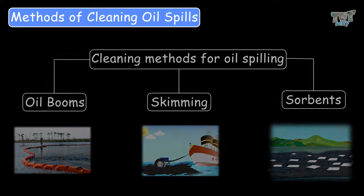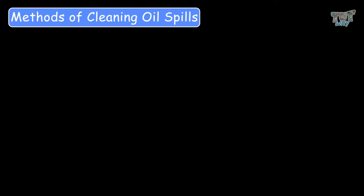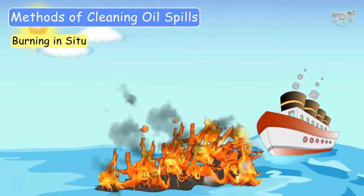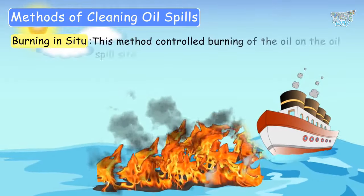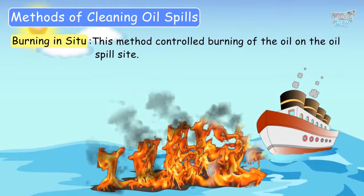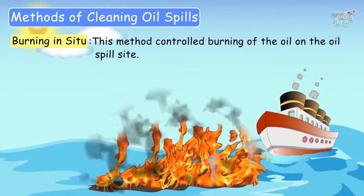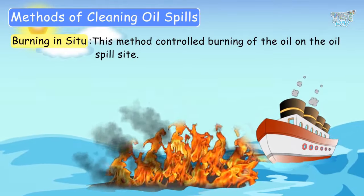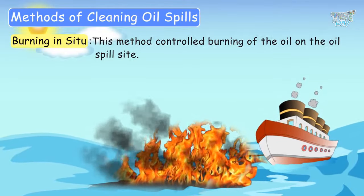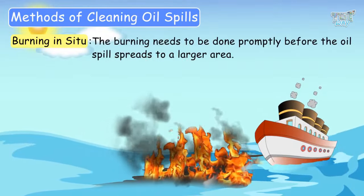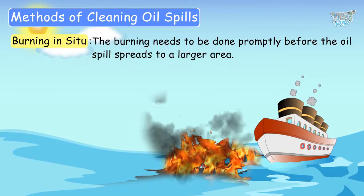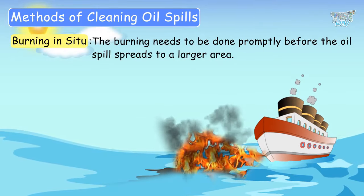Now another method that is used to clean up oil spills is burning in situ. This method involves controlled burning of the oil on the oil spill site. The burning needs to be done promptly before the oil spreads to a larger area.